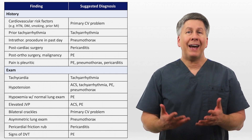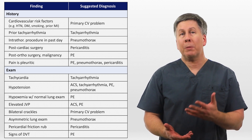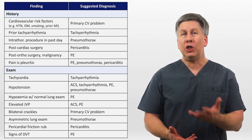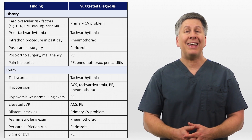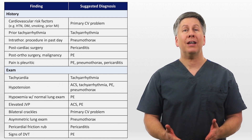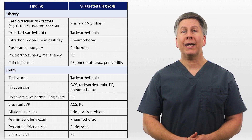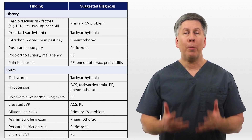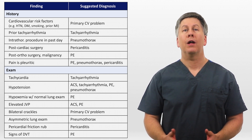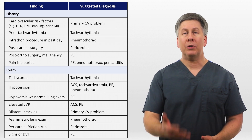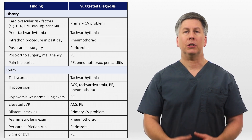You may notice there aren't any specific features on exam or history that really point towards a GI etiology or anxiety, and in the hyperacute setting there really isn't. The focus is on ruling out life-threatening cardiac and pulmonary problems, and once they've been ruled out, you can do a deeper dive to separate out the other possibilities.